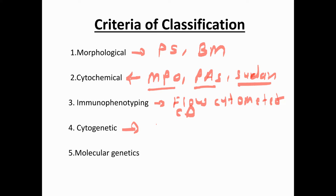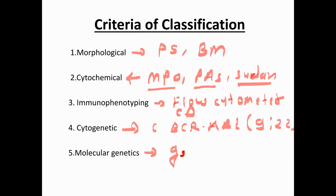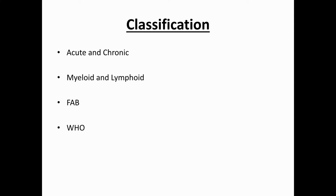Fourth is cytogenetics, which detects abnormalities at the chromosomal level — like BCR-ABL, the t(9;22) translocation in CML patients. Most advanced is molecular genetics, which detects mutations at the gene level. Our body has 46 chromosomes containing 20,500 genes; mutations in these genes — like BCR-ABL, ALL gene rearrangement, deletion, or inversion — can be detected by molecular genetics, leading to leukemia.